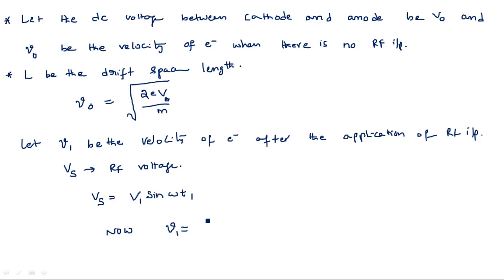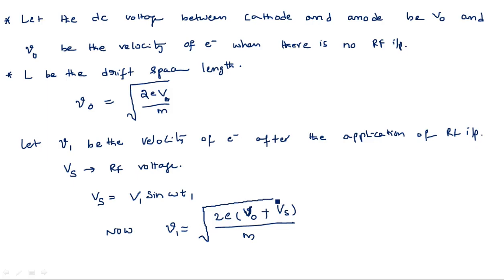Previously, when there was no RF input voltage, v0 equals the square root of 2eV naught divided by m. Now, small v1 equals the square root of 2e times (V naught plus Vs) divided by m, because the RF input voltage Vs is also added. So small v1 equals the square root of 2e(V naught plus Vs) divided by m.